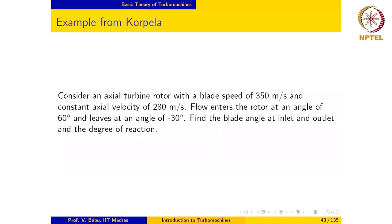Let us now look at the next example. The problem statement reads like this: consider an axial turbine rotor with a blade speed of 350 meters per second and constant axial velocity of 280 meters per second. Flow enters the rotor at an angle of 60 degrees and leaves at an angle of minus 30 degrees. Find the blade angle at inlet and outlet and the degree of reaction.